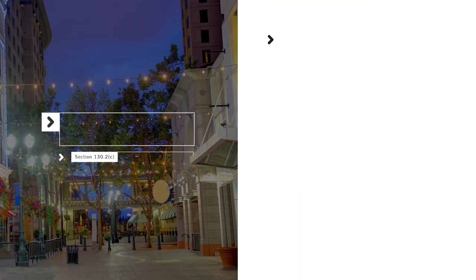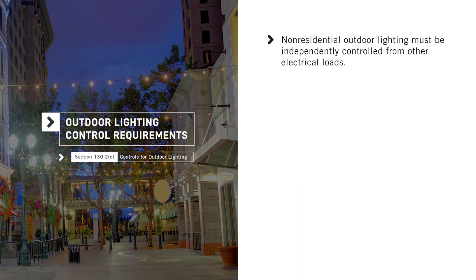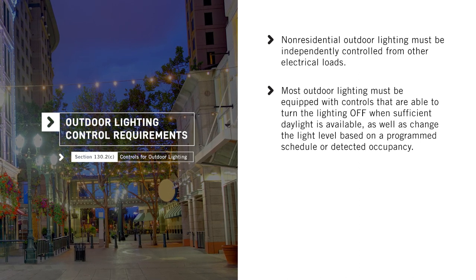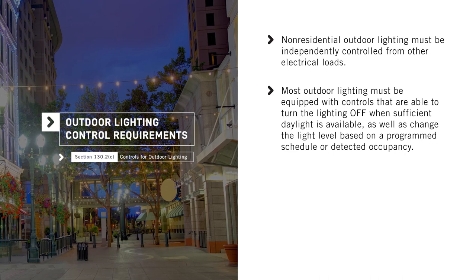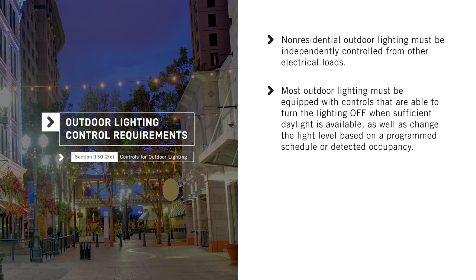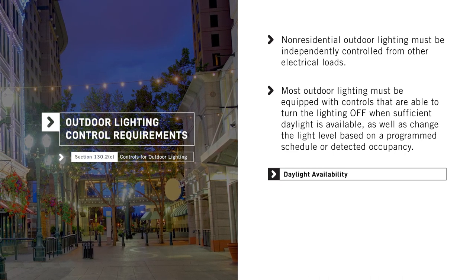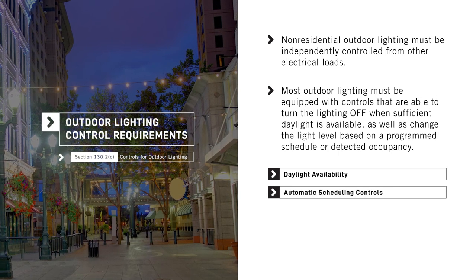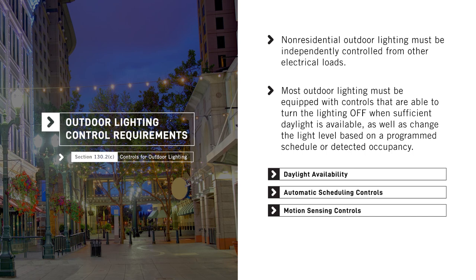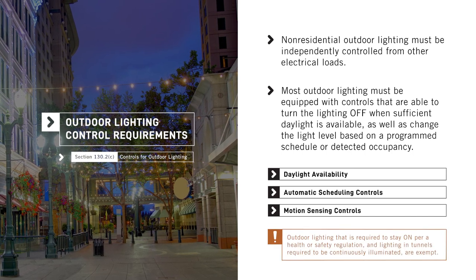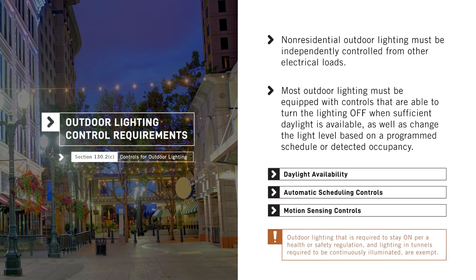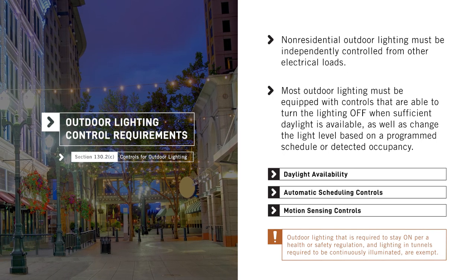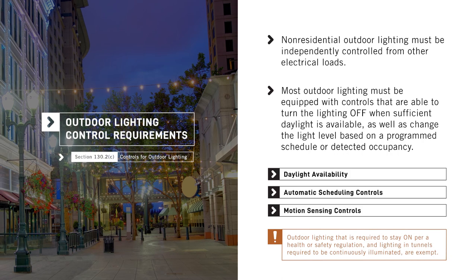The Energy Code requires that non-residential outdoor lighting be independently controlled from other electrical loads, and that most outdoor lighting be equipped with controls that are able to turn the lighting off when sufficient daylight is available, as well as change the light level based on a programmed schedule or detected occupancy. Exceptions include outdoor lighting required to stay on per a health or safety regulation, and lighting in tunnels required to be continuously illuminated.